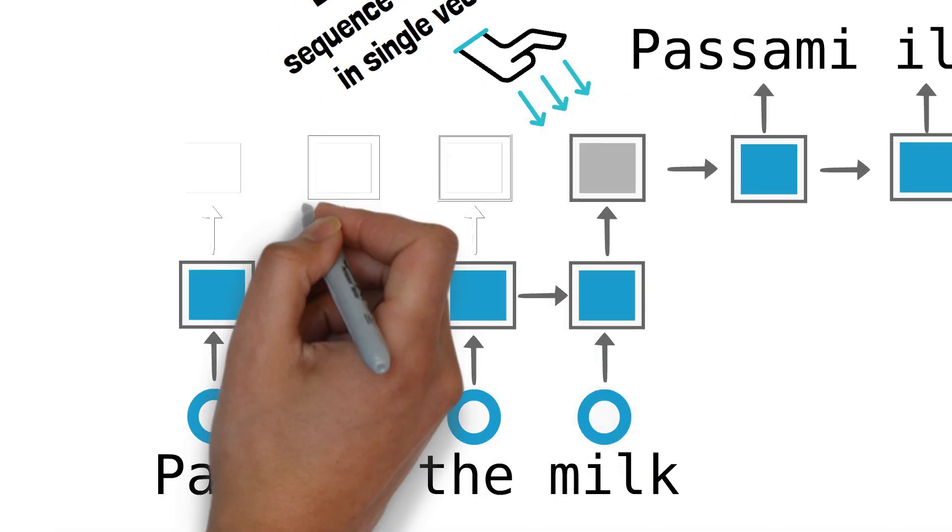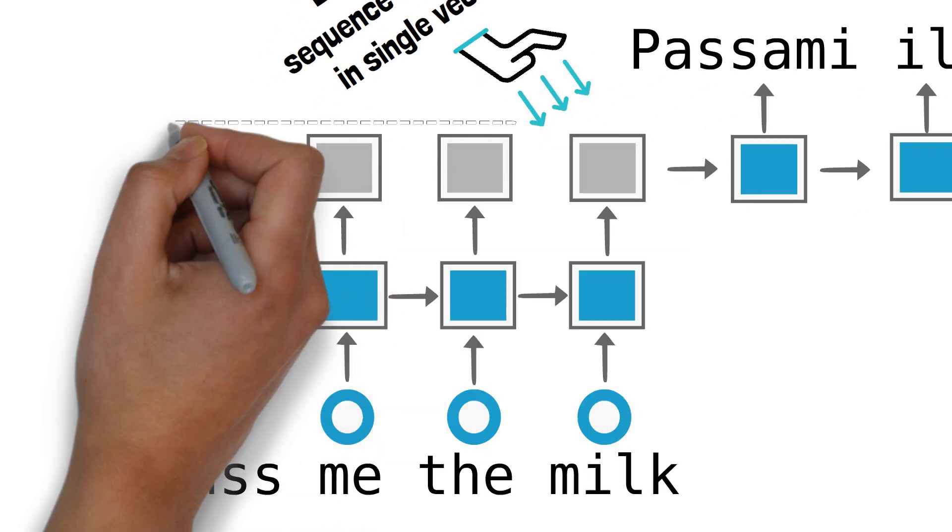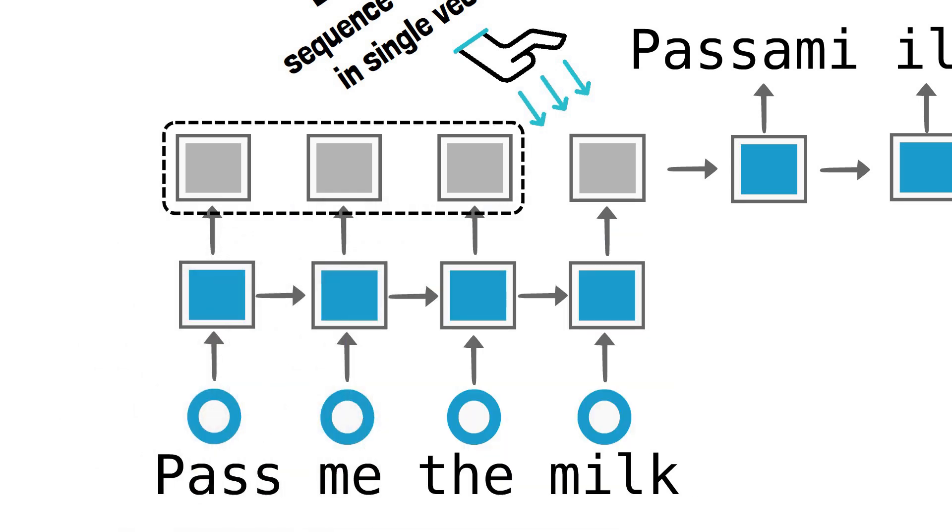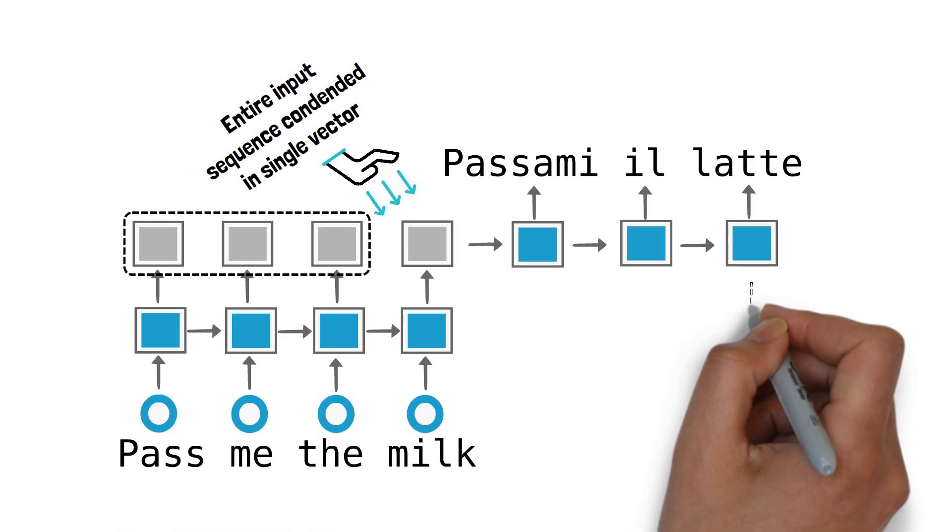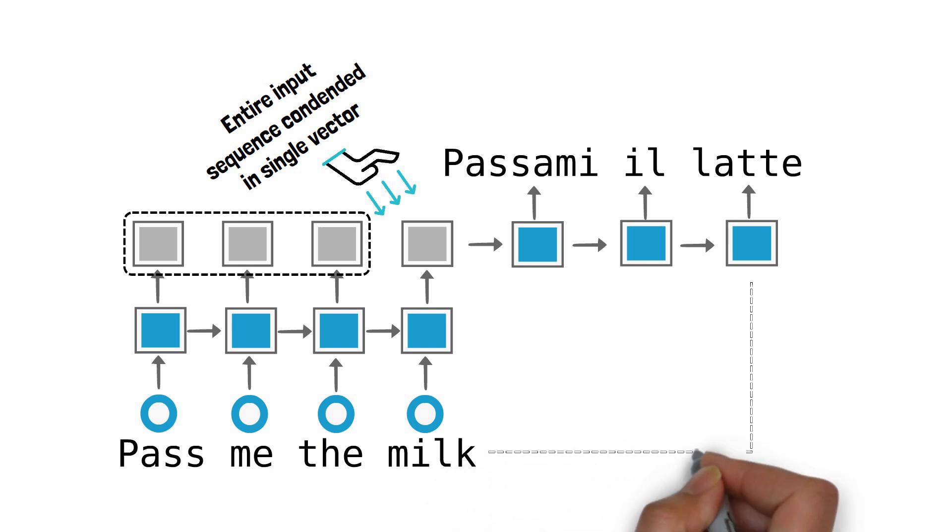In truth every encoder hidden state at each input point holds important information. For example the English word milk corresponds directly to the Italian word latte but not to the other words.